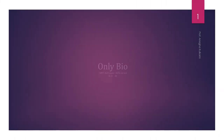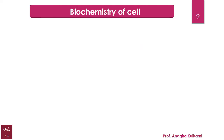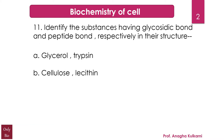Welcome back to my channel. Today I'm presenting NEET 2020 paper MCQs from 11 to 20 with detailed explanation. The first question relates with the chapter biochemistry of cell, and the question is: identify the substances having glycosidic bond and peptide bond respectively in their structure. The options given are: A) glycerol and trypsin, B) cellulose and lecithin.